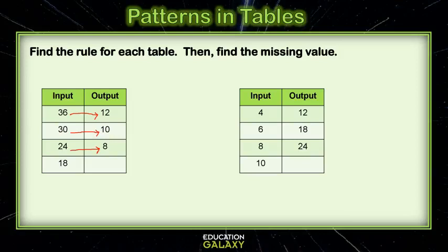Well, 36 to 12, I can divide by 3, and that would also get 30 to 10 and 24 to 8. So then to figure out 18, I just do 18 divided by 3 and I get 6.